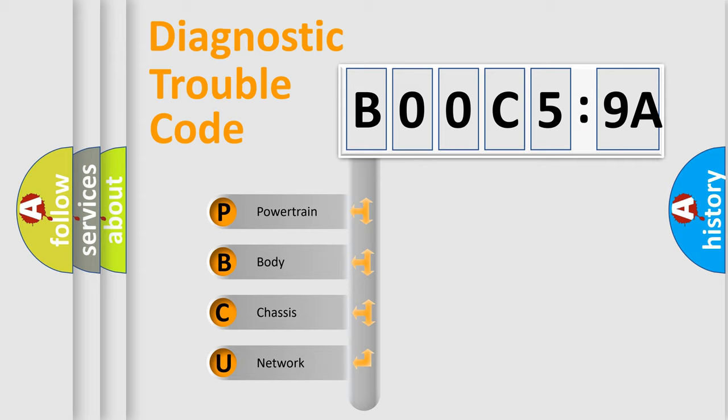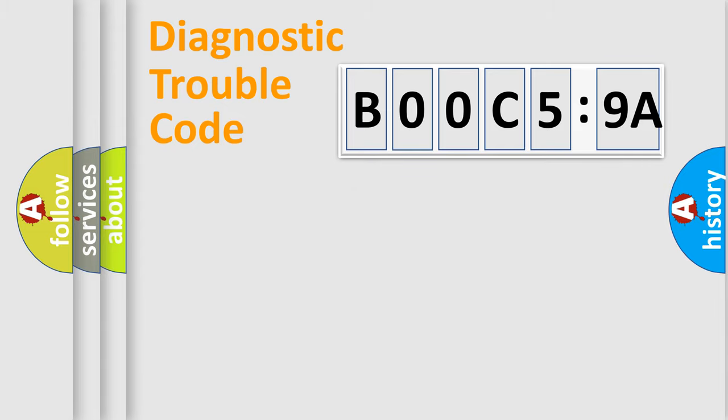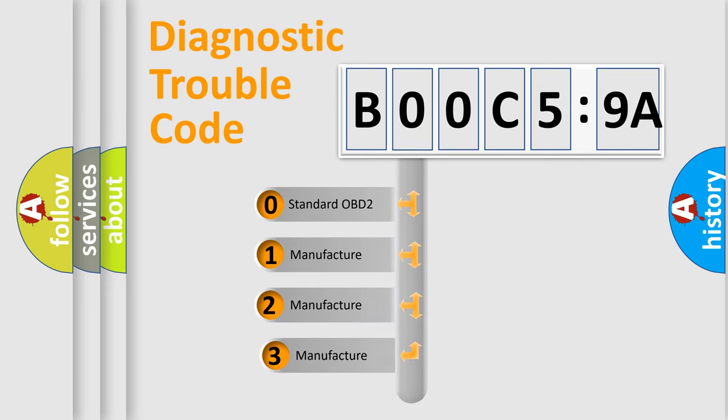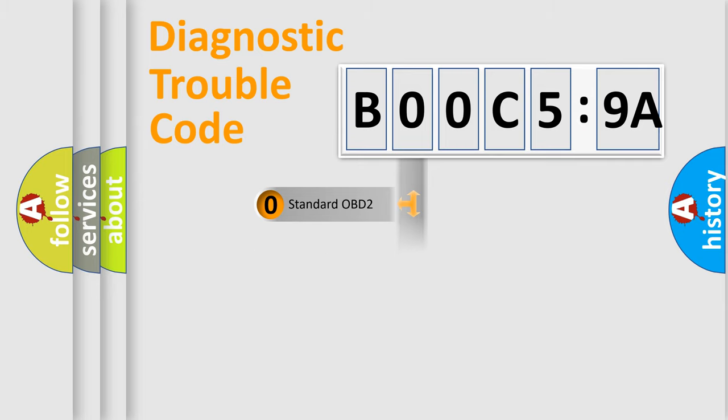If the second character is expressed as zero, it is a standardized error. In the case of numbers 1, 2, or 3, it is a more specific expression of the car-specific error. The third character specifies a subset of errors. The distribution shown is valid only for the standardized DTC code. Only the last two characters define the specific fault of the group.